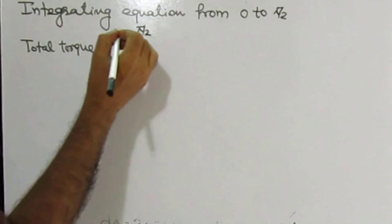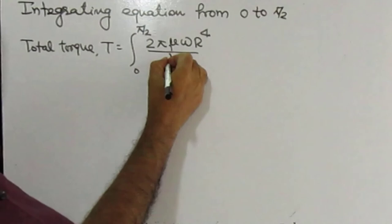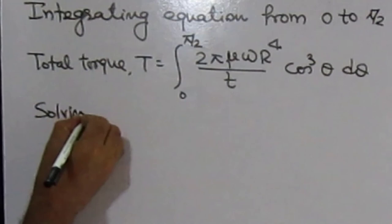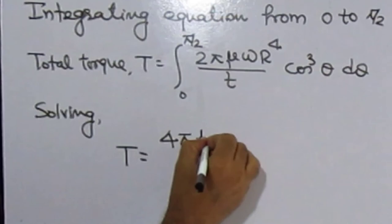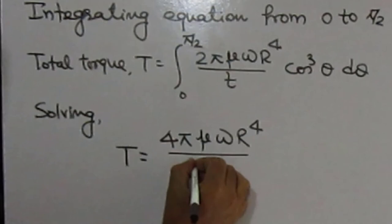T equals the integral from 0 to pi/2 of 2π·mu·omega·R⁴/t × cos³(theta) d theta. After solving the above equation, we get T equals 4π × mu × omega × R⁴ divided by 3t. This is the torque T and the answer to this question.